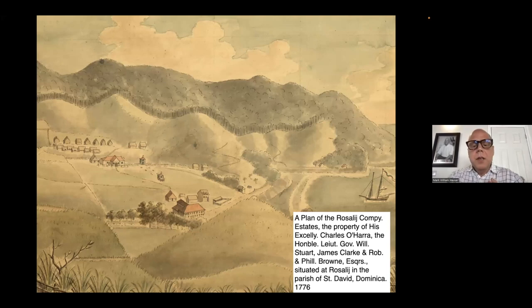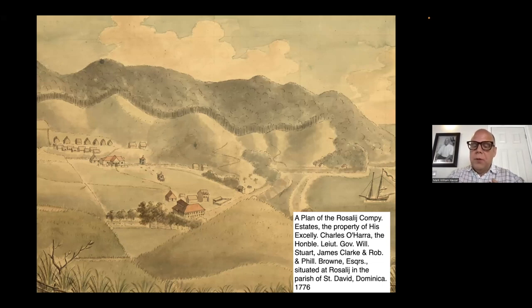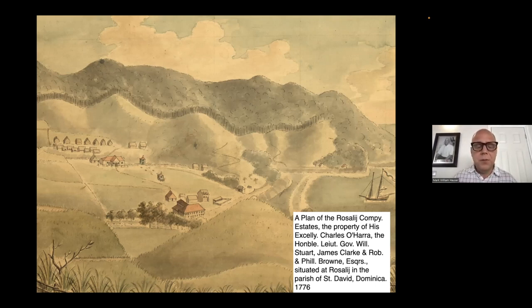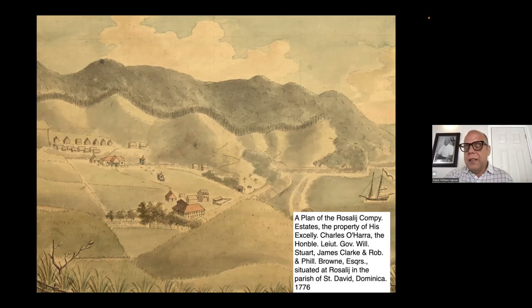The predicament many of the enslaved were facing was to take an island that was heavily wooded, densely forested, with steep slopes and very little land considered ideal for growing sugar cane, and essentially terraform it into something from which landowners could profit. Part of the reason the island was difficult to convert into this specific form of commodity production was the slope, but also the need to manage water.